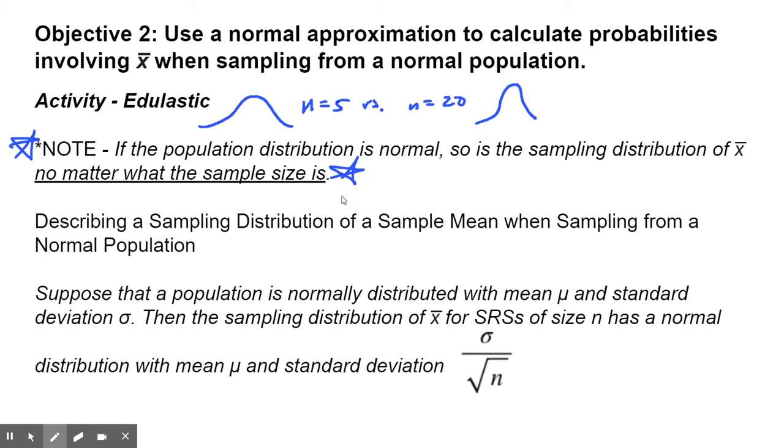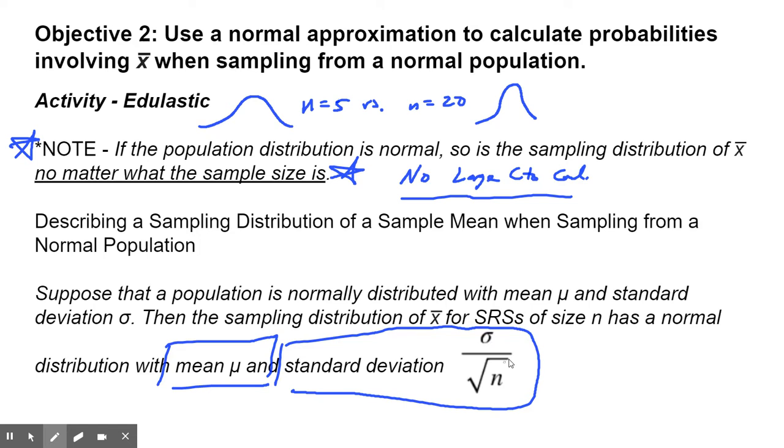So no matter what the sample size is, we don't have to do the large counts condition like we did with the other two sections with sample count and sample proportion. This is just a summary. When describing the sampling distribution of a sample mean when sampling from a normal population, your mean will be μ, the population mean, and your standard deviation will be σ divided by the square root of n. Those are the two things you'll use to build your normal distribution.